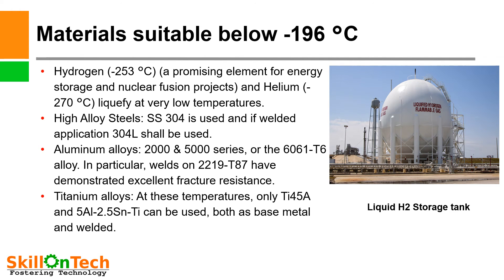Materials suitable below –196°C. Helium boils at –270°C and hydrogen at –253°C. These cryogenic temperatures are promising for energy storage and nuclear fusion projects, where these elements liquefy at very low temperatures. Temperatures below –196°C are very difficult to reach, and the storage of liquid and the selection of suitable material is very important at these temperatures.